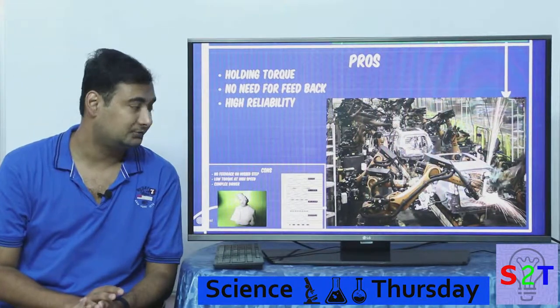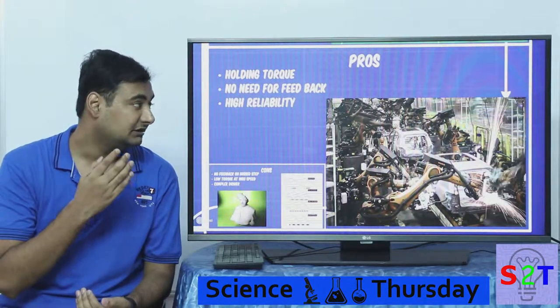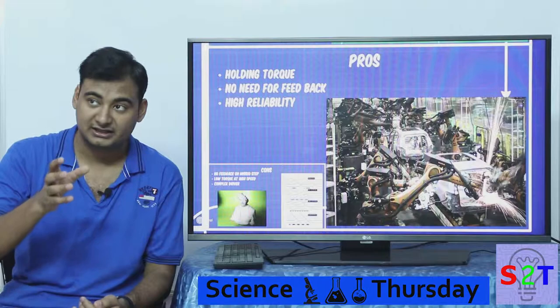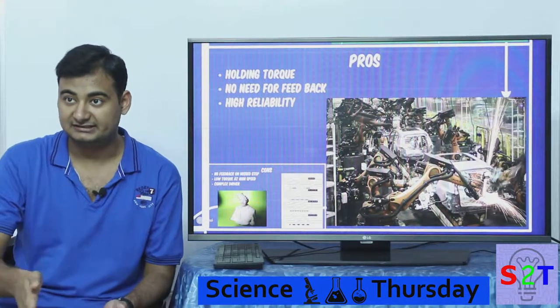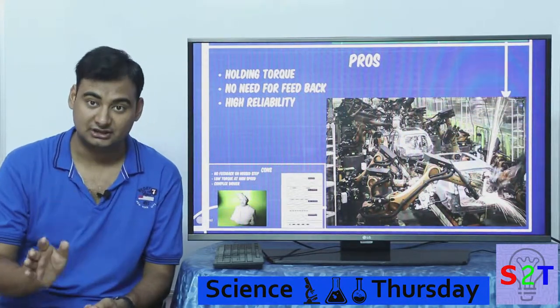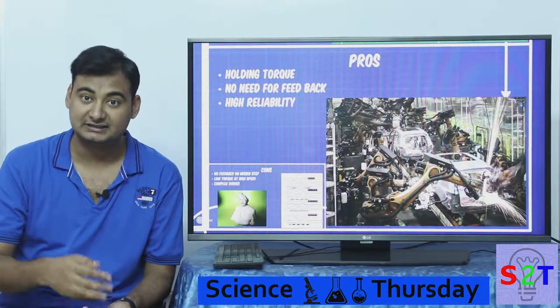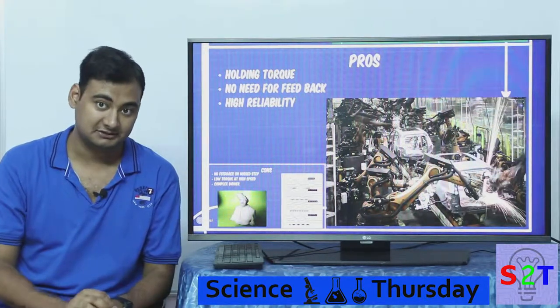But this does have holding torque. Now I said it is an open loop system. What does that mean? It does not need an encoder. It's an open system. It does not require another circuitry going back and forth that is telling whether it has rotated or not, has it rotated this much or not. You can add those things but it can work without it.